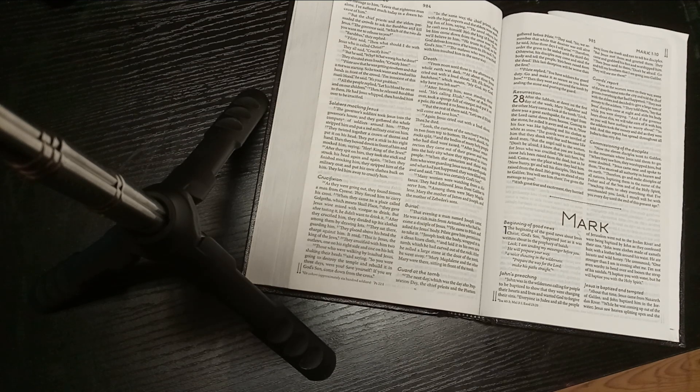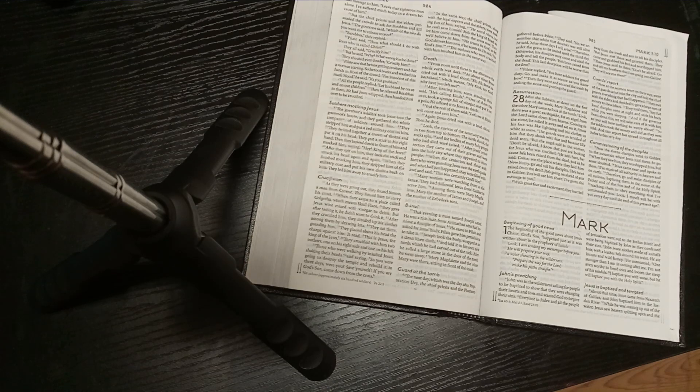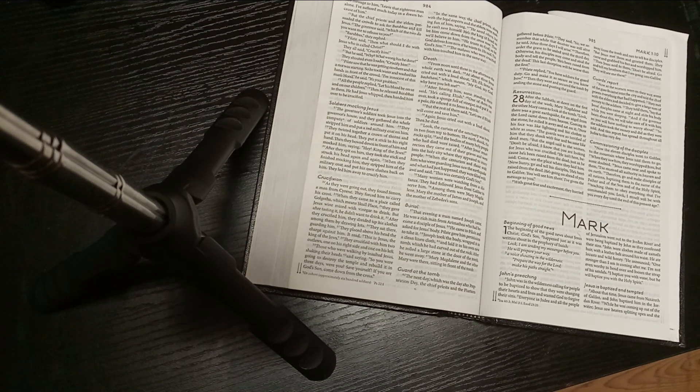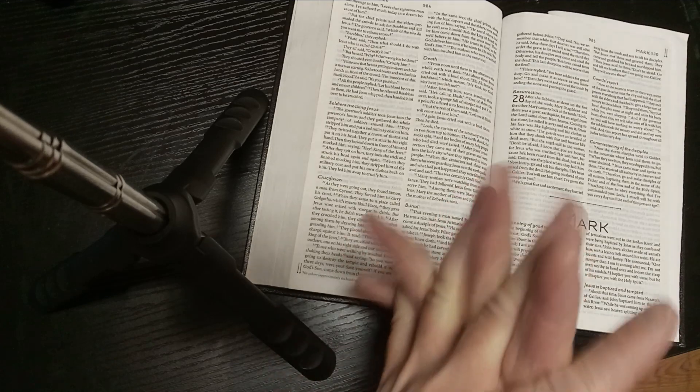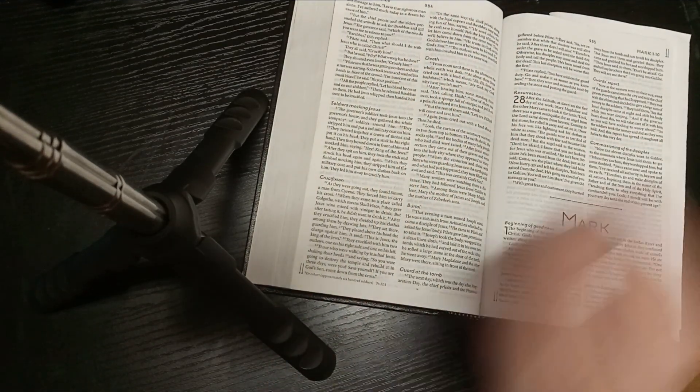After the Sabbath, at dawn on the first day of the week, Mary Magdalene and the other Mary came to look at the tomb. Look, there is a great earthquake, for an angel from the Lord came down from heaven. Coming to the stone, he rolled it away and sat on it. Now his face was shining like lightning, and his clothes as white as snow. The guards were so terrified of him that they shook with fear and became like dead men. But the angel said to the women, 'Don't be afraid. I know that you are looking for Jesus who is crucified. But he isn't here, because he has been raised from the dead, just as he said. Come and see the place where they laid him. Now hurry, go and tell his disciples, he's been raised from the dead. He's going on ahead of you to Galilee. You'll see him there.'